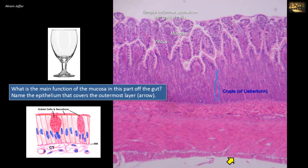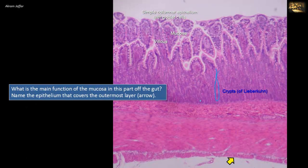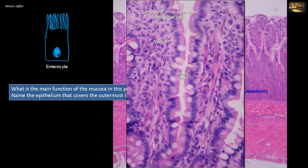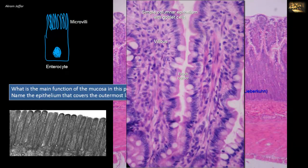Most of the columnar cells, apart from goblet cells, are simple columnar cells mainly concerned with absorption, called enterocytes. They are present on the villus and continue into the crypts and are the main absorptive cells — the main function of the epithelium. Higher magnification shows a brush border representing microvilli on the luminal surface. These projections cannot be seen on light microscopy but are indicated by the hazy brush border; they can only be seen by electron microscopy and further increase the surface area for absorption.